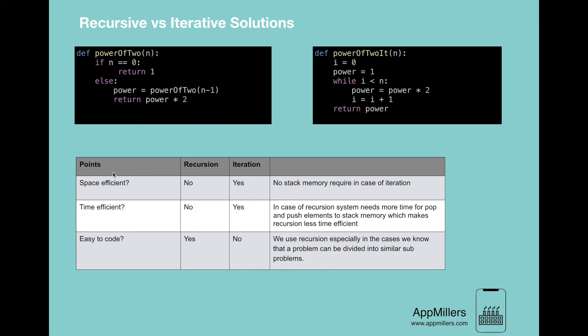This table describes the differences between recursion and iteration. The first point is space efficiency. Recursion is not space efficient — it takes O(n) space complexity. On the other hand, iteration is memory efficient because no stack memory is required; we are not pushing any method calls onto the stack during iteration.